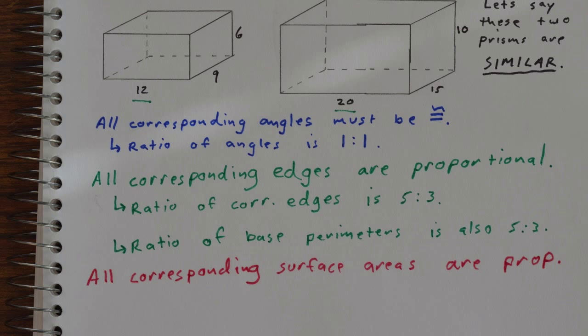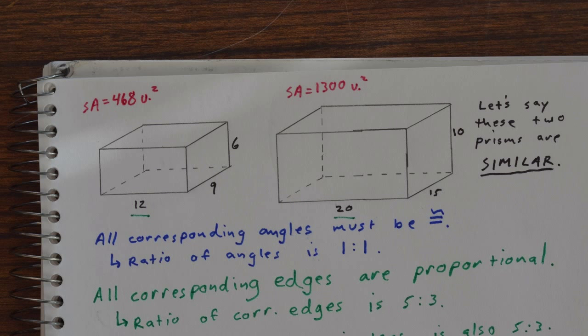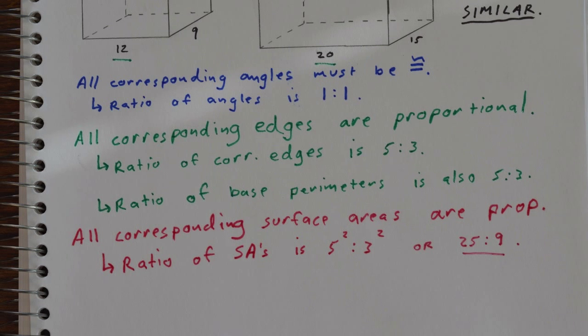Now all corresponding surface areas are also proportional. However, they're not going to follow the same ratio, not 5 to 3. If we take the surface areas, total surface areas, that area ratio, 1300 divided by 468, ends up being 25 to 9, which is related to 5 to 3, right? The surface areas are 5 squared to 3 squared. And so any of those surface area measurements, the two dimensional measurements, will follow that squared ratio.